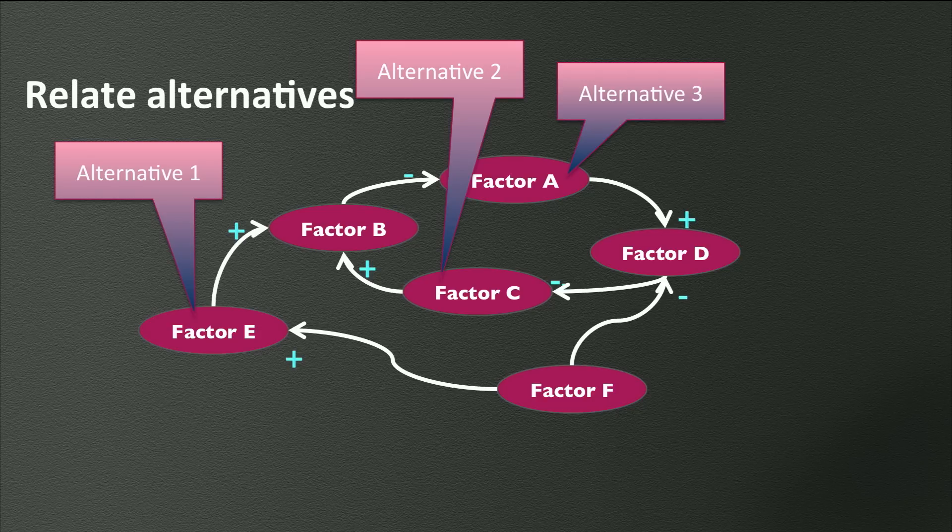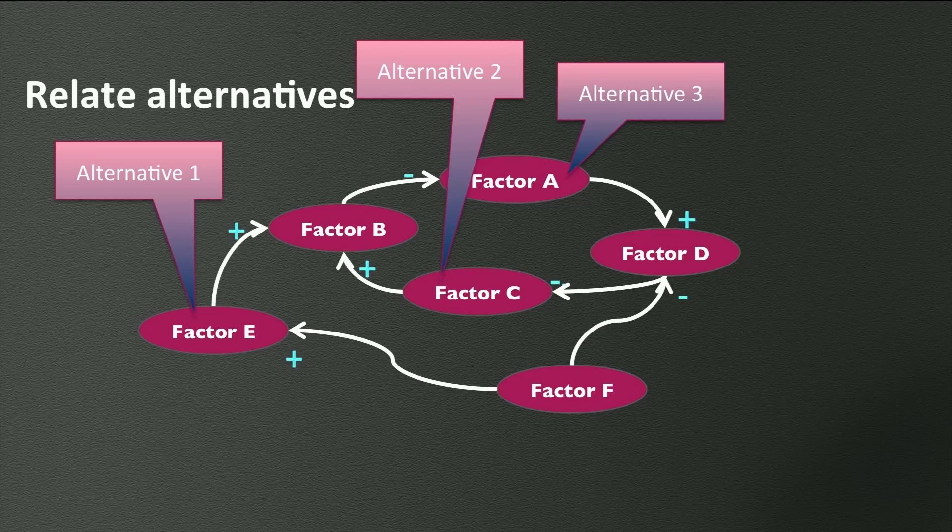If you have completed the factors in the causal diagram, have a look at your list of alternatives, your list of means, the one you have identified so far. All these means should somehow influence at least one of the factors in this causal diagram.